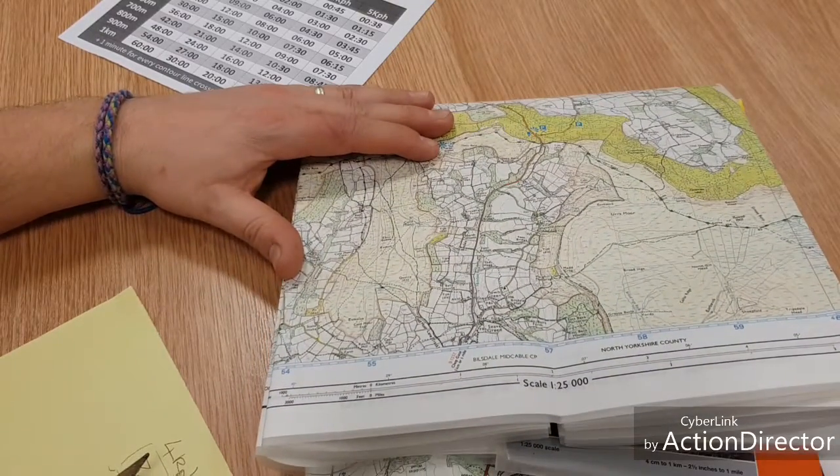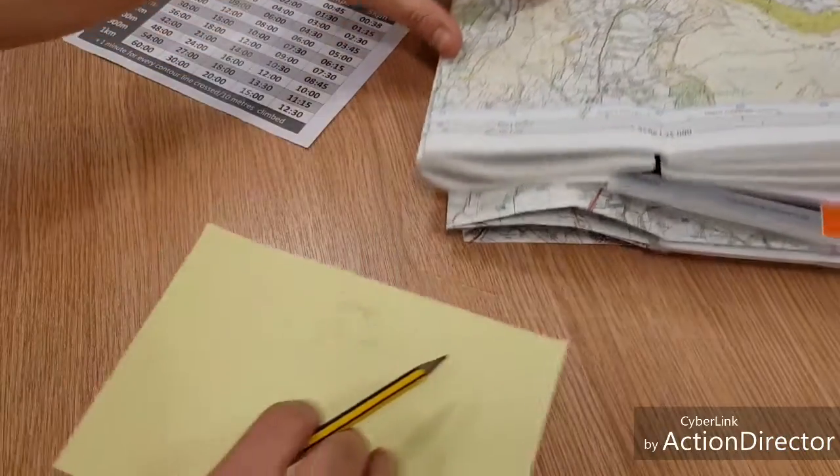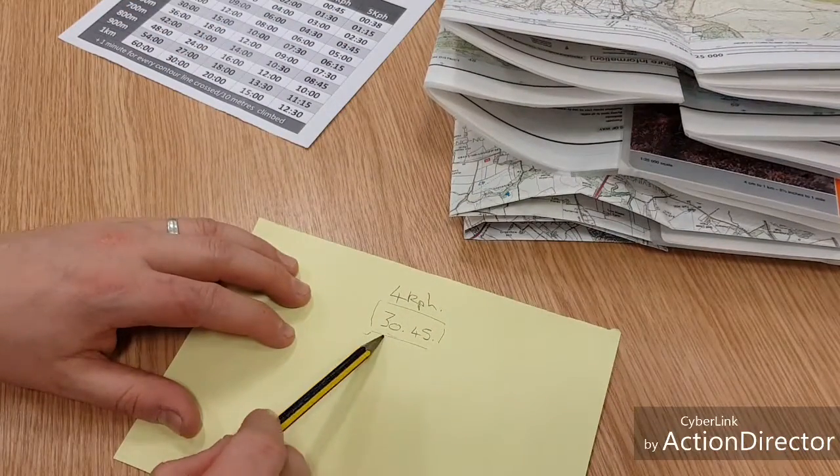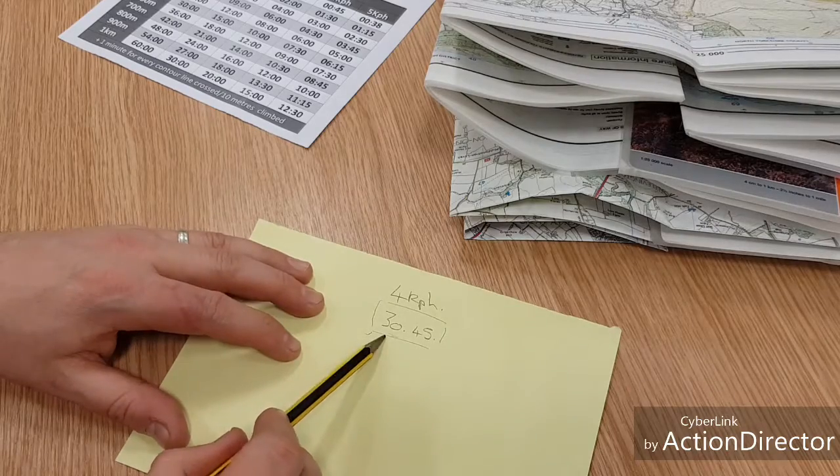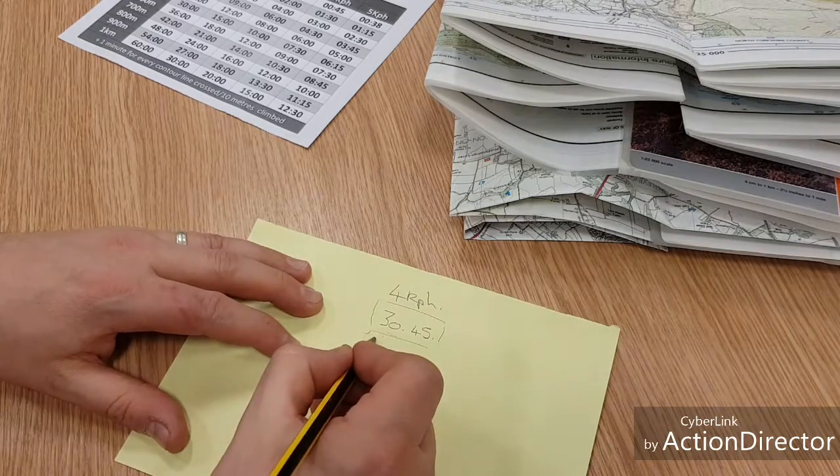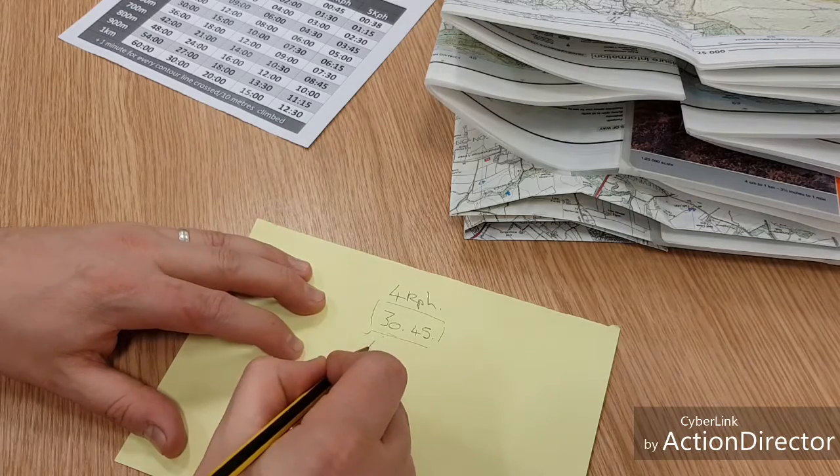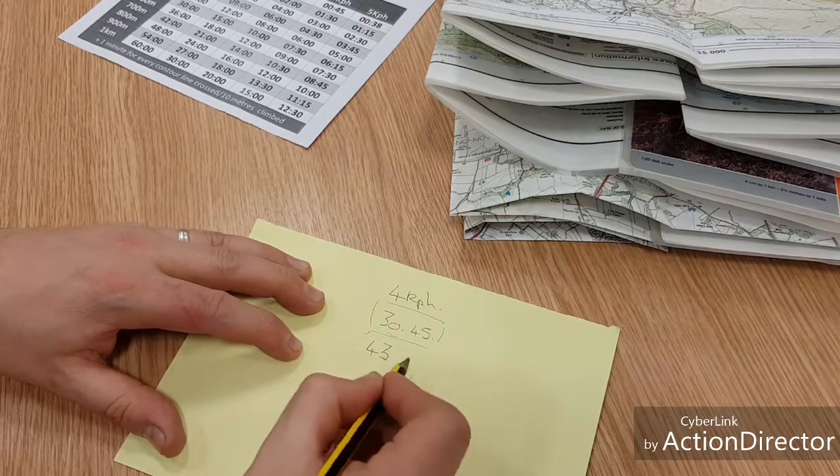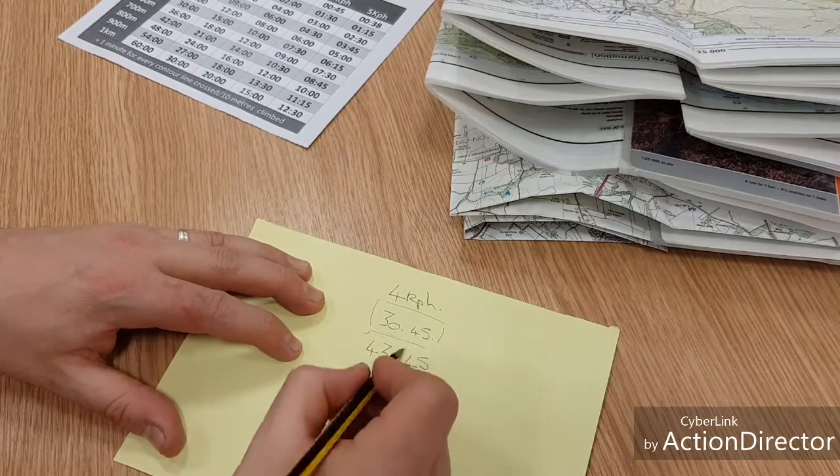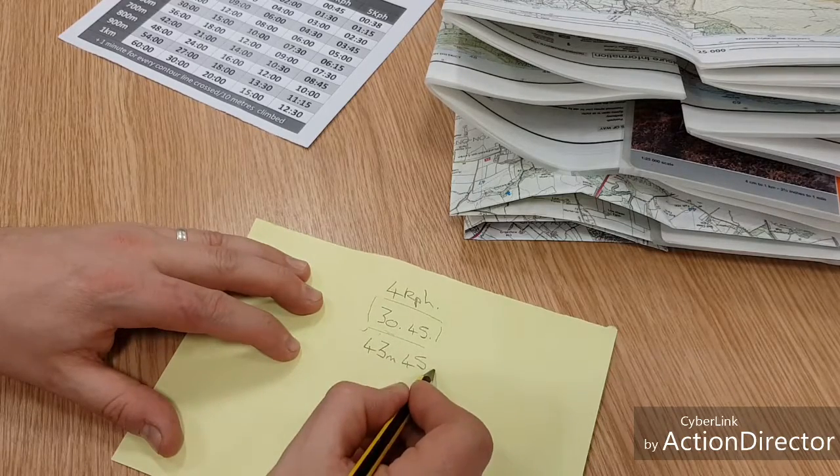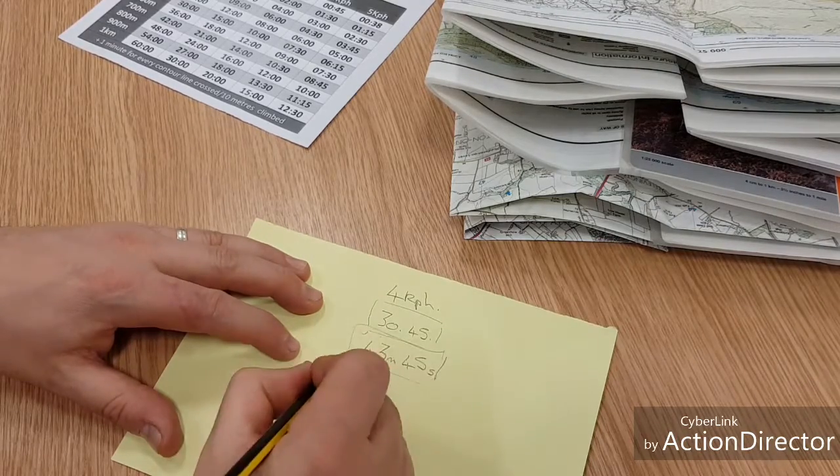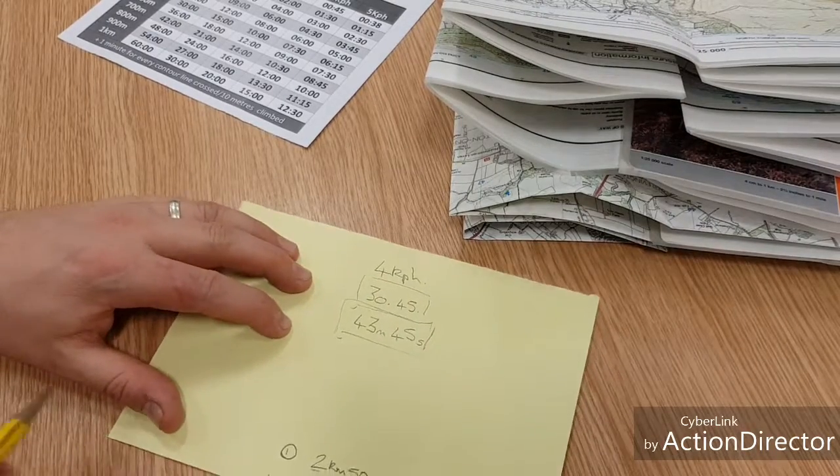So let's go back to our calculation. Initially the distance at 4 kilometers an hour, it was going to take 30 minutes 45 seconds. We know that we need to add 13, we're going to cross 13 contour lines, therefore that's going to be 43 minutes 45 seconds for that leg. So on our route card now we can add that in there.